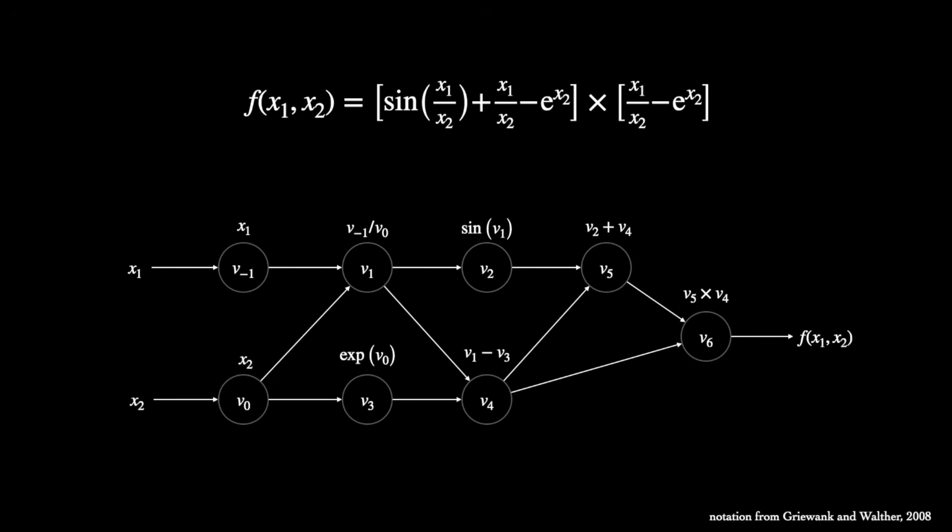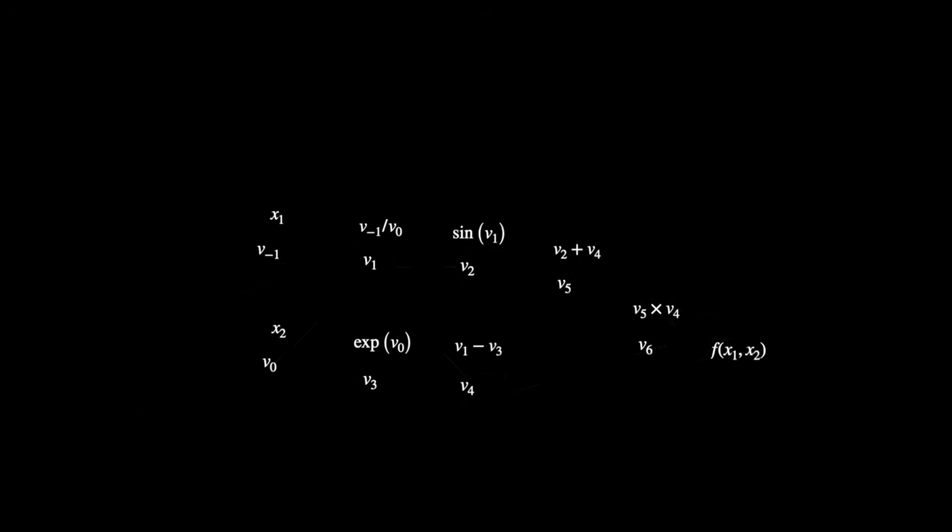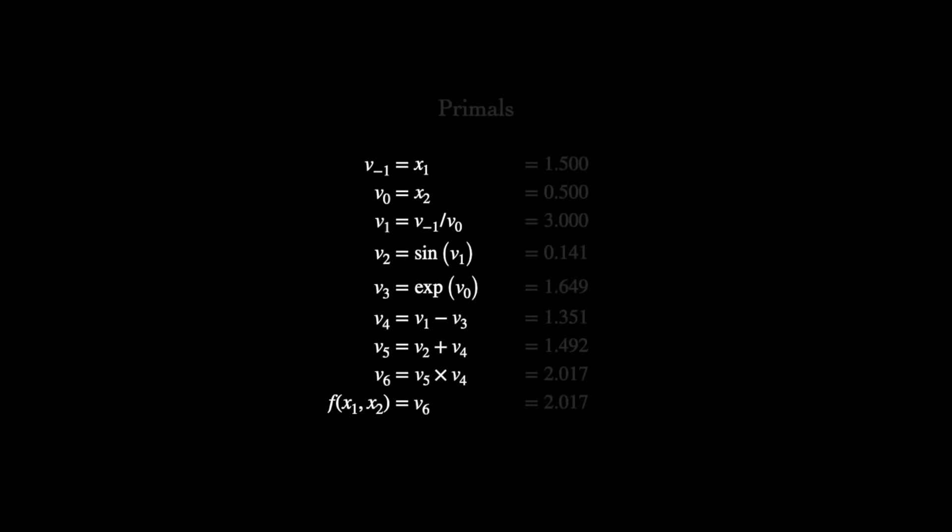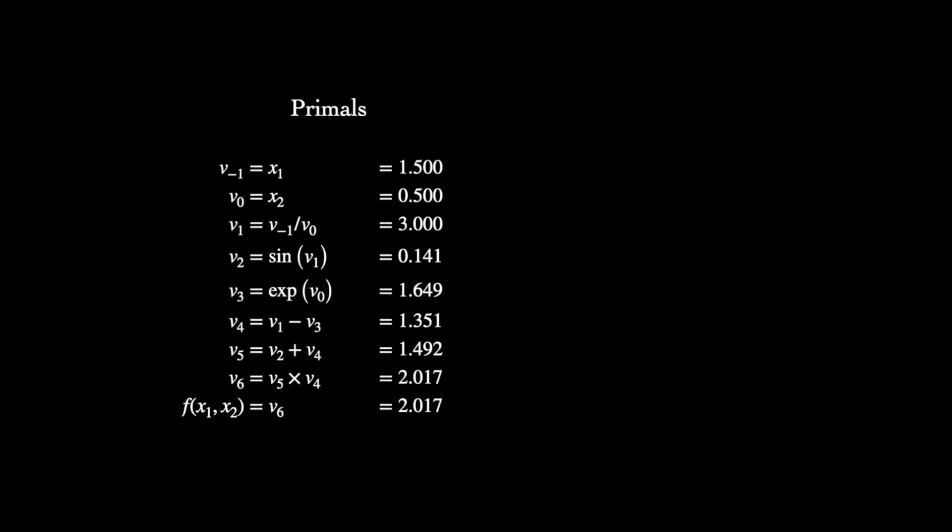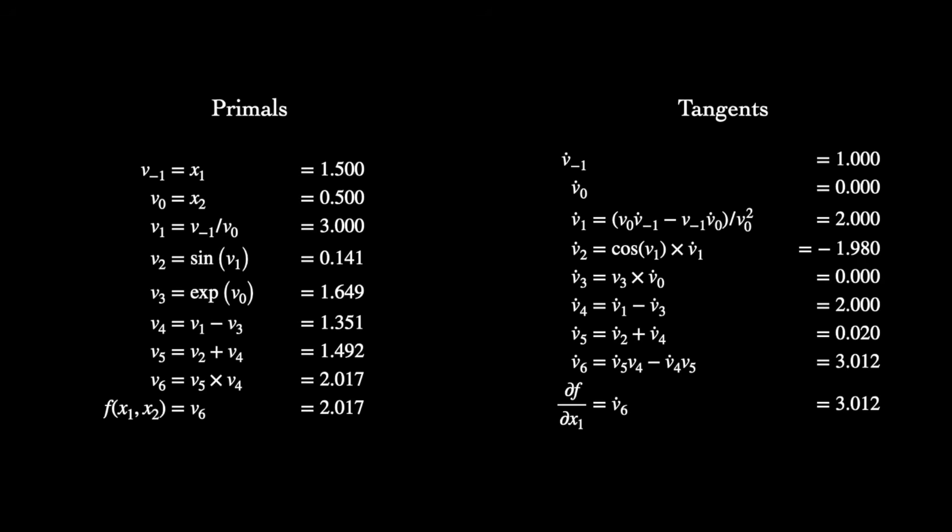Now, suppose we'd like to compute the partial derivative of this function with respect to x1, at the point x1 equals 1.5 and x2 equals 0.5. In addition to computation of the primals, we simultaneously compute their tangent values. That is, each evaluation of an intermediate variable, vi, will now be accompanied by the value of partial vi, partial x1. A single pass through the function now produces not only the original output, but the partial derivative of interest.